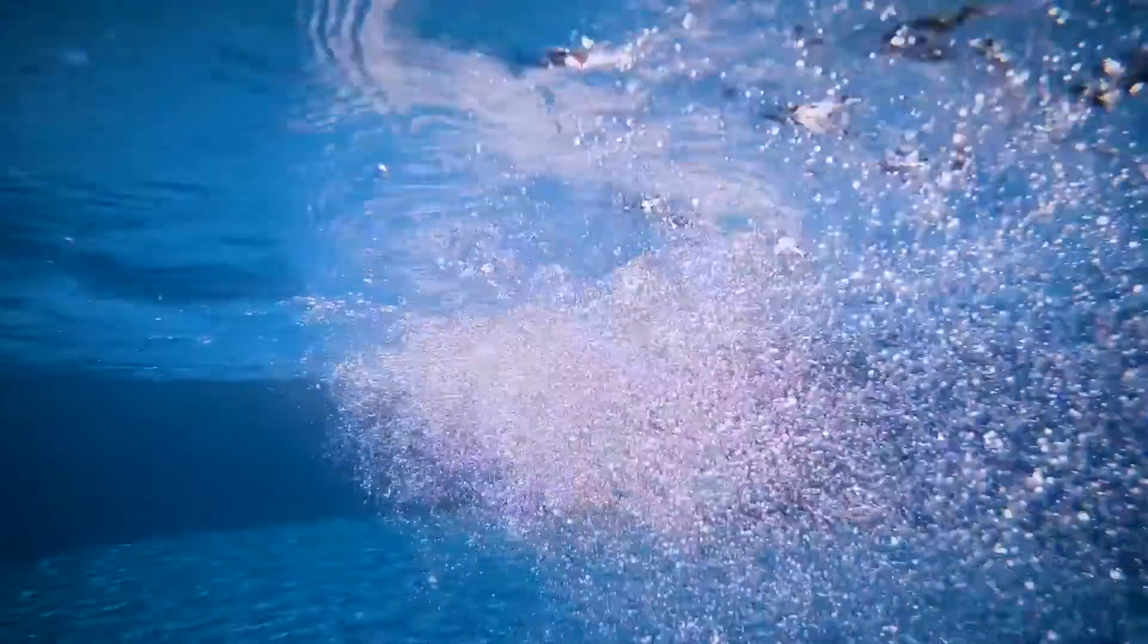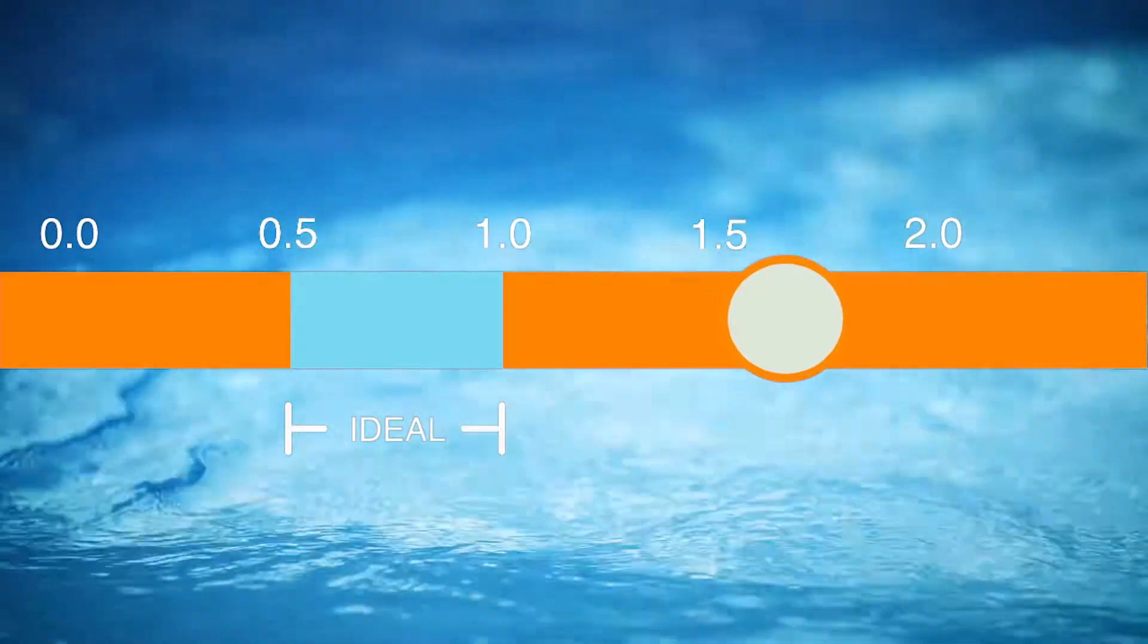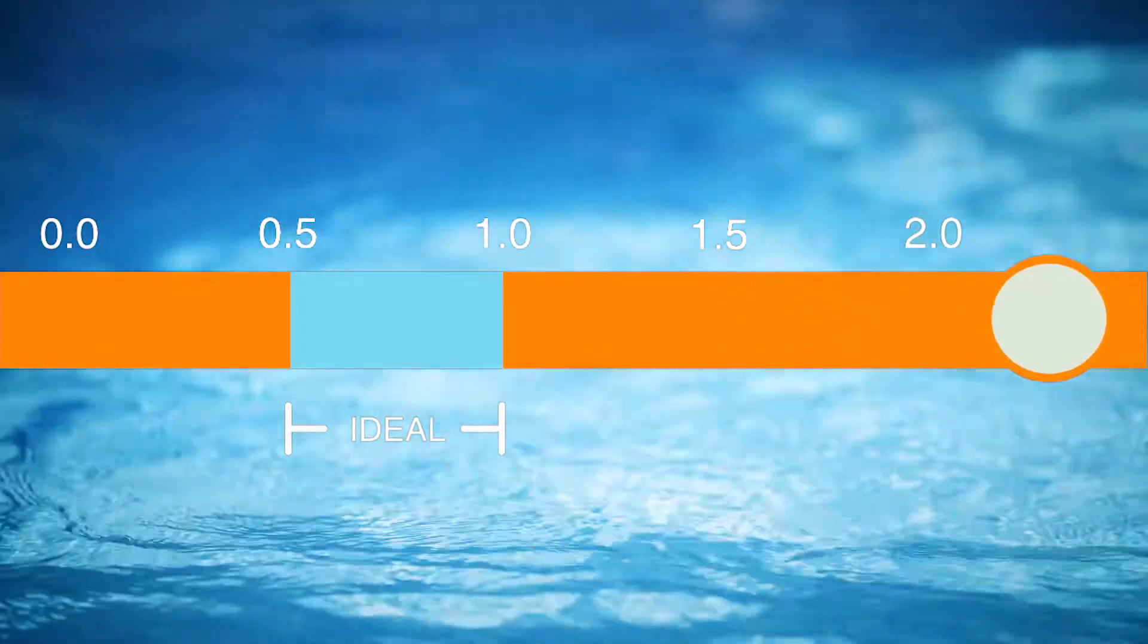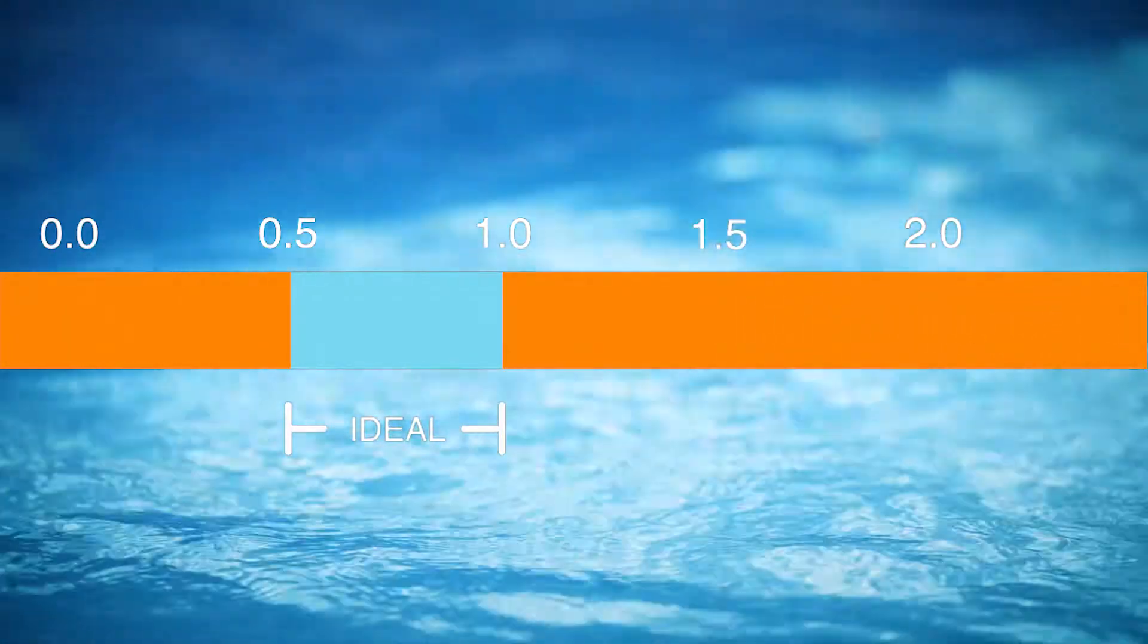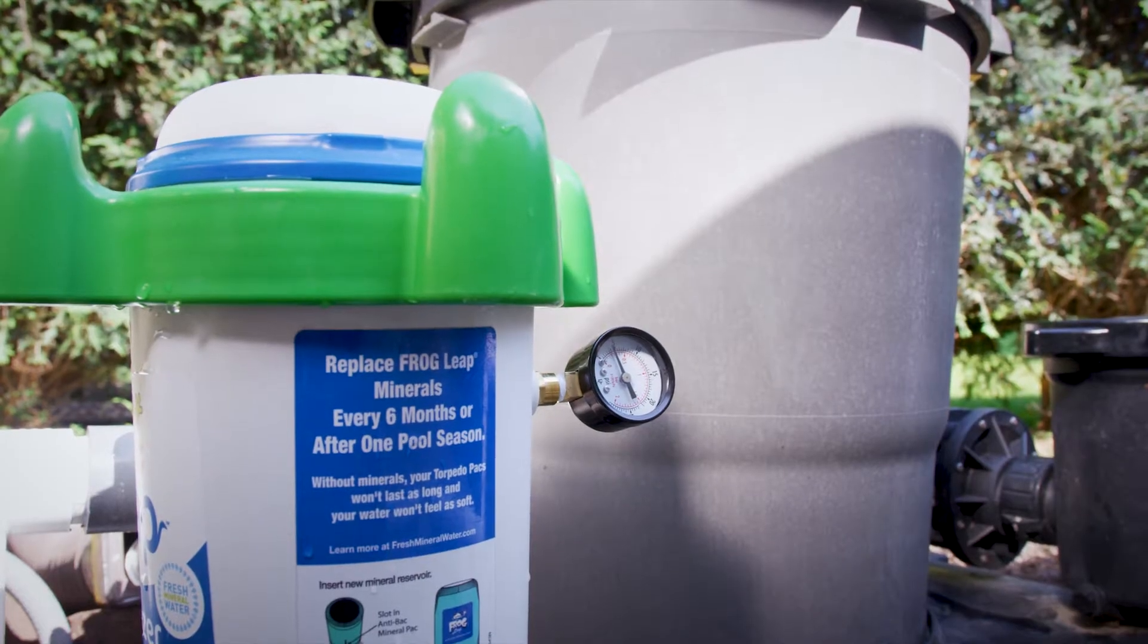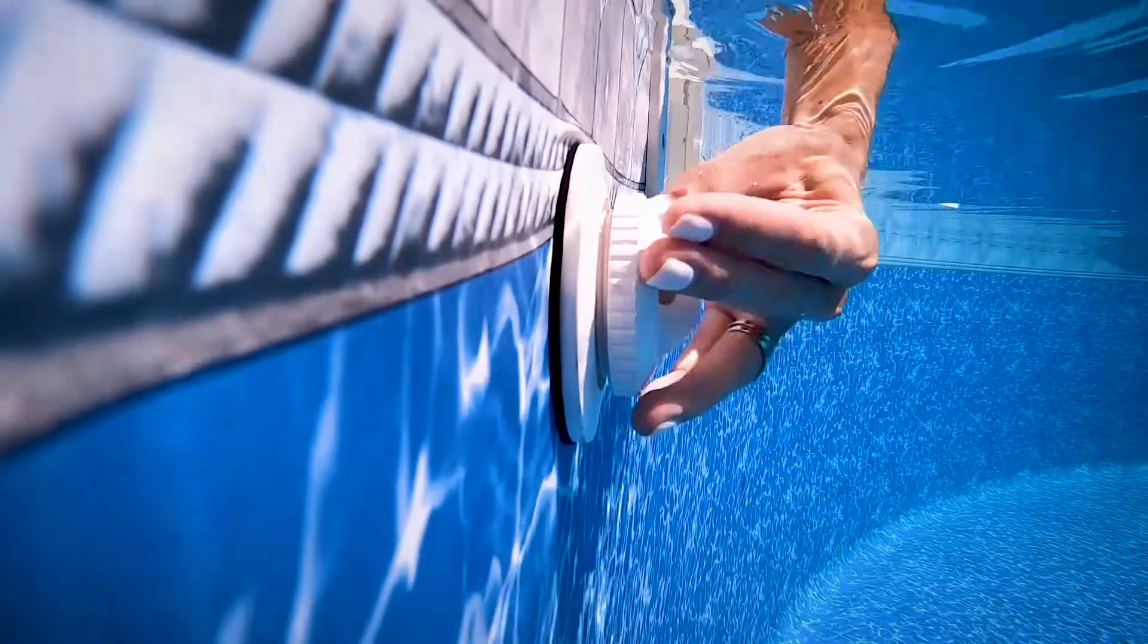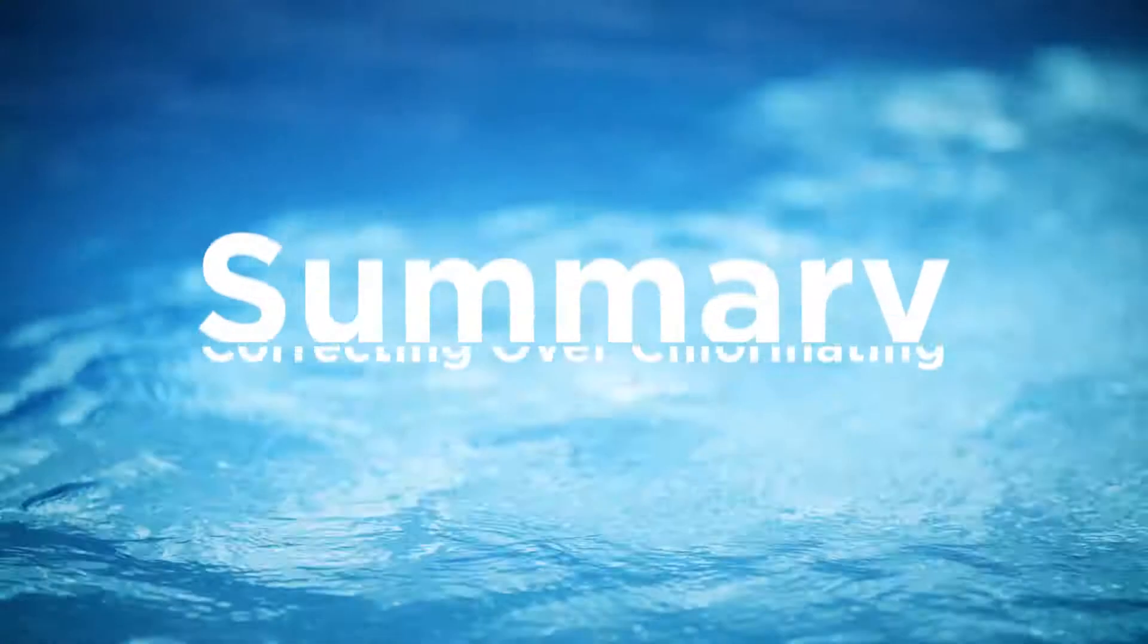That should do it. But if your chlorine level remains above 3.0 ppm, it's time to contact your dealer. He or she may want to check your back pressure, which controls the amount of water in the system. You may need a new eyeball fitting in the return jet.